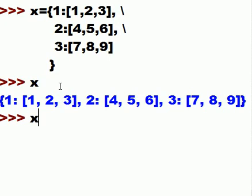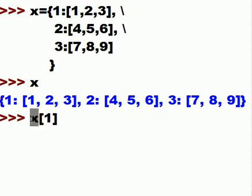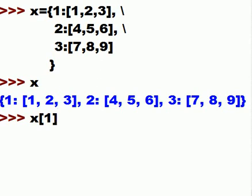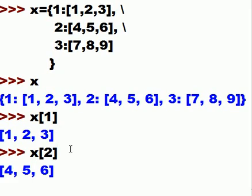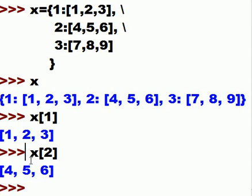Now I'll access a value by key. I type x with key one to search the dictionary. It returns one, two, three — exactly the list value associated with key one.